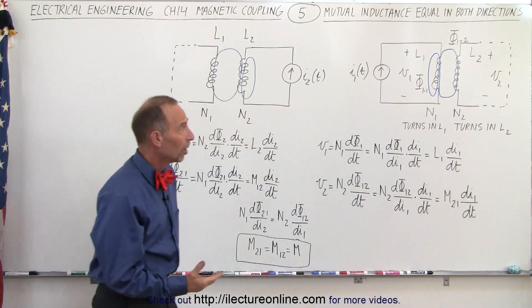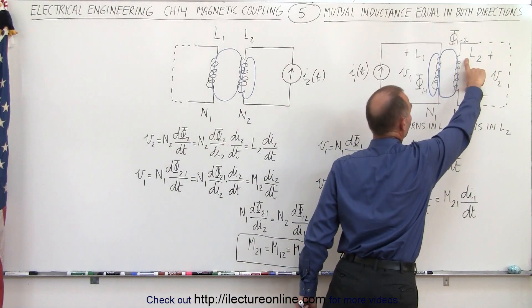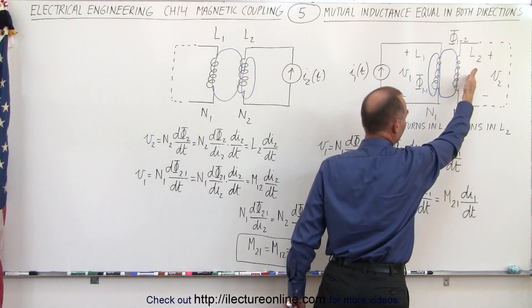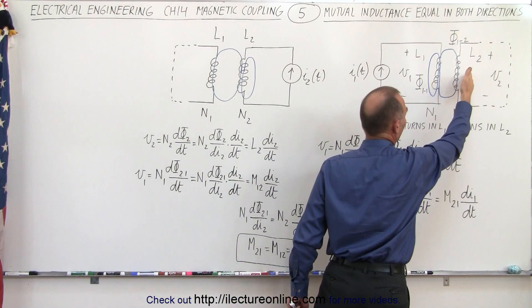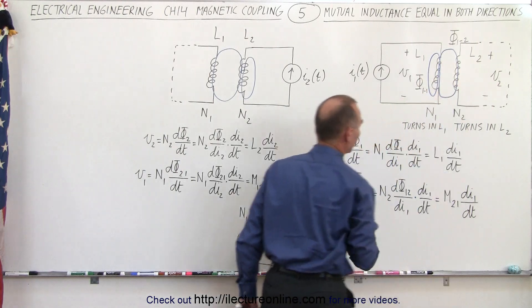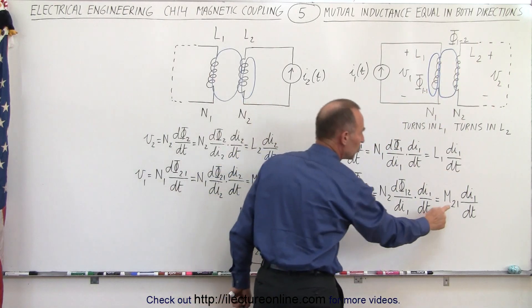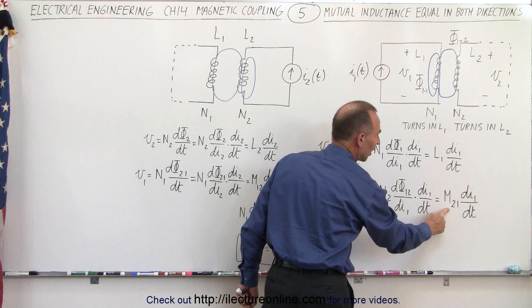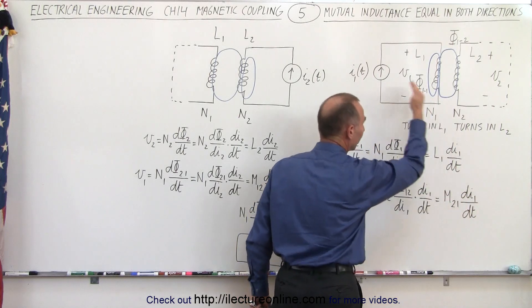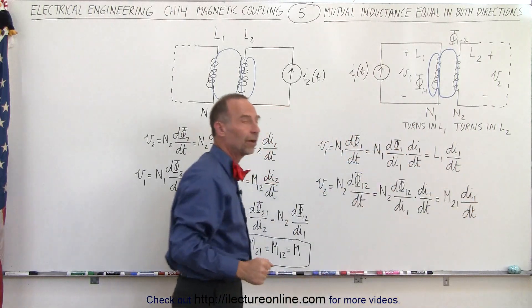We then saw that the voltage across the inductor on the second circuit, which was caused by the mutual inductance between the two inductors, was equal to the mutual inductance times the rate of change of the current in the first circuit with respect to time.